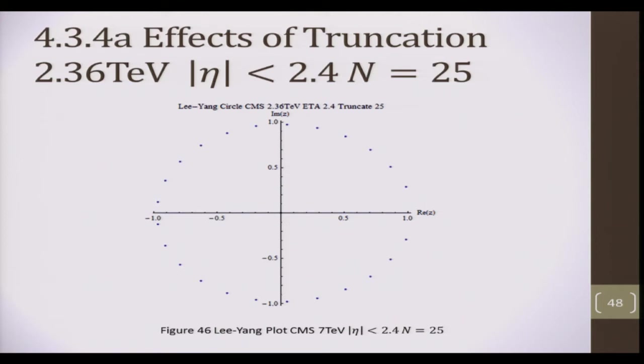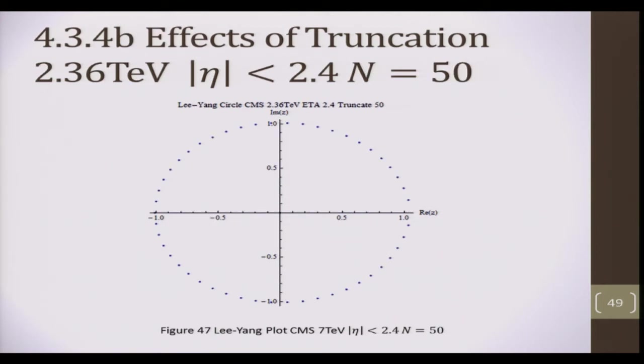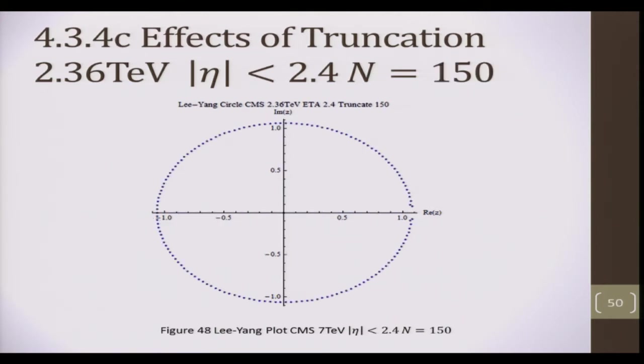So, again, for the case of the largest pseudo-rapidity cut, 2.4. No ears until the largest cutoff of N is 150. So what can we say? The ear structure which was previously thought to be associated with increasing energy, is also associated with pseudo-rapidity cut, and also the truncation cutoff N.